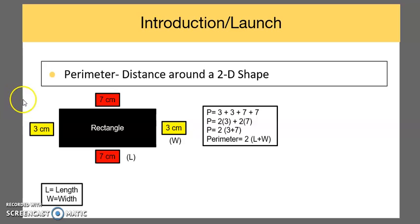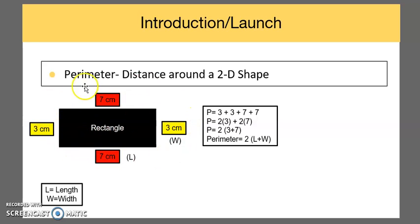We want students to understand perimeter. Perimeter is the distance around a two-dimensional shape. When we're looking at this figure of a rectangle, we add up all four sides to get our perimeter.